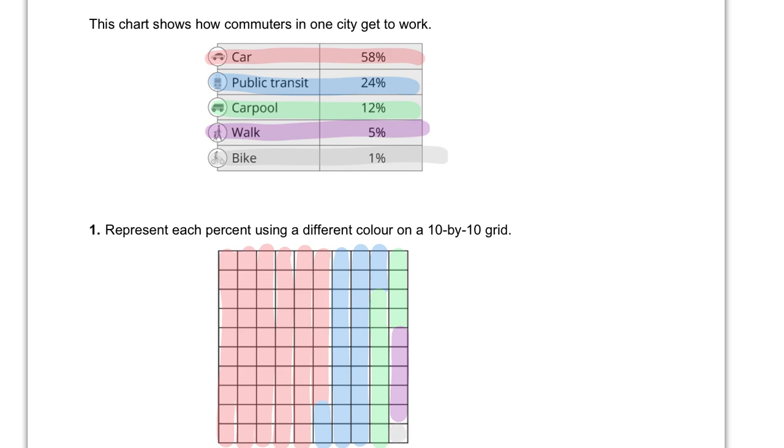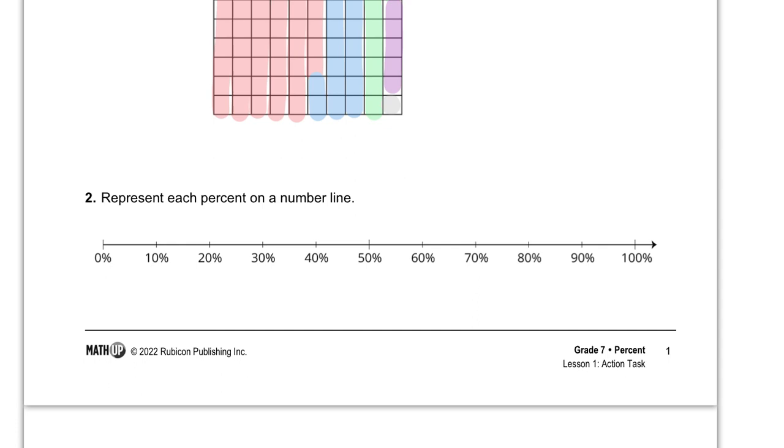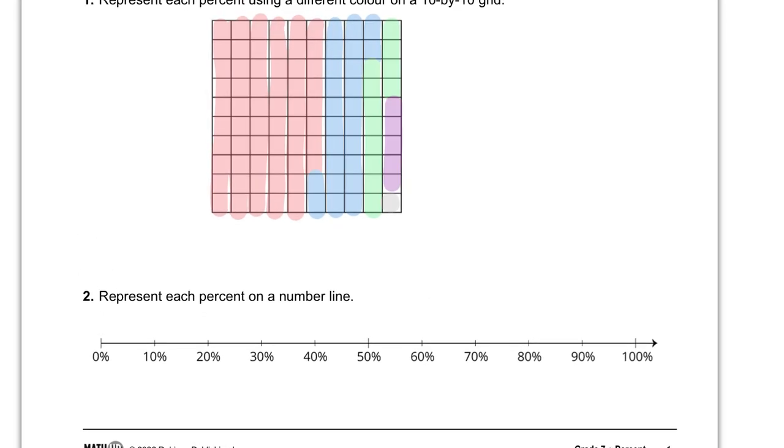Okay, let's see what the next question is. It says represent each percent on a number line. Well, we have 58%, somewhere between 50 and 60%, probably closer to 60%. So let's go ahead and put that right about here, and we'll label it 58%. Next we have 24% in blue. Well, 24 is between 20 and 30. 25 is exactly between there, and so this should be just shy of that. So there's 24% right there.